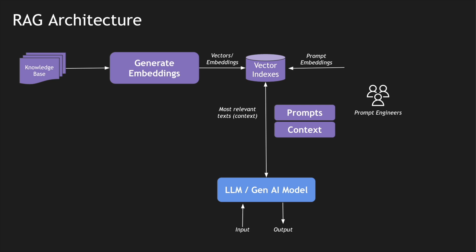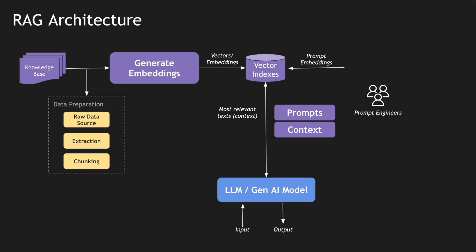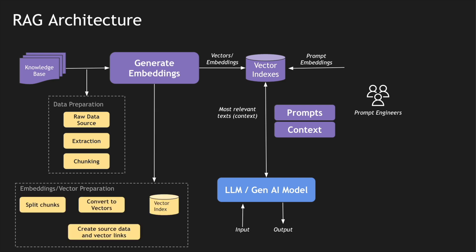At a high level that is the architecture, but let me go deeper into the individual components. When we convert the knowledge base or source of truth into embeddings, there is a lot of data preparation to be done. These raw data sources need to have meaningful information extracted from them, and we need to chunk them into smaller blocks to convert them into vectors. We convert the document or knowledge base, chunk them into smaller objects, feed that into an embedding conversion logic where we split these chunks into smaller vectors, store them in the vector index, and create linkages between the data and the vectors.